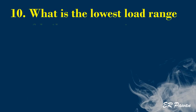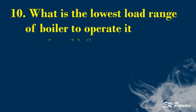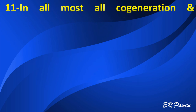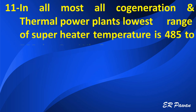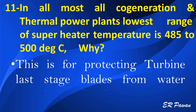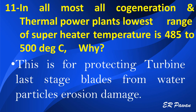Question 10: What is the lowest load range of a boiler to operate it comfortably? It is around 30 to 40%. Question 11: In almost all cogeneration and thermal power plants, the lowest range of superheater temperature is 485 to 500 degrees centigrade — why? This is for protecting turbine last stage blades from water particle erosion damage.